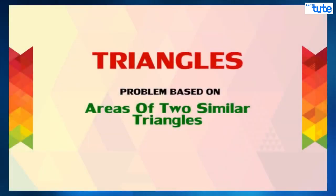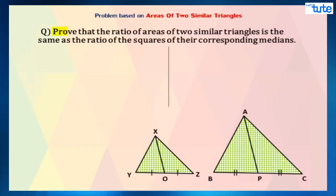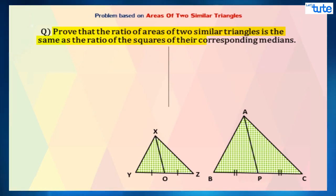In this video, we are going to solve problems based on areas of two similar triangles. Let us take a look at the sum. It says: prove that the ratio of areas of two similar triangles is the same as the ratio of the squares of their corresponding medians.